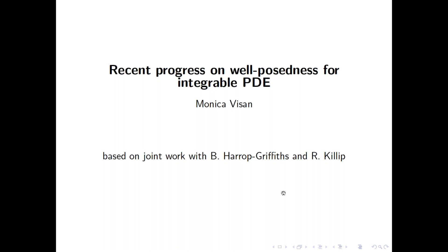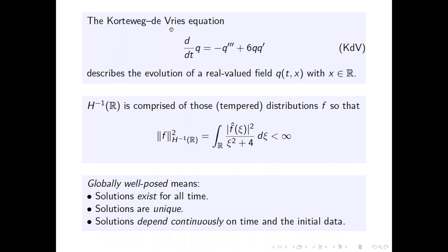The results I will describe are joint mainly with Ben Herob-Griffith and Rowan Killip. I will start by introducing the Korteweg-de Vries equation, then describe the method that Rowan Killip and I developed for proving optimal well-posedness for this equation. After that, depending on time, I will tell you about recent developments for other completely integrable systems such as the cubic NLS and the mKdV equation.